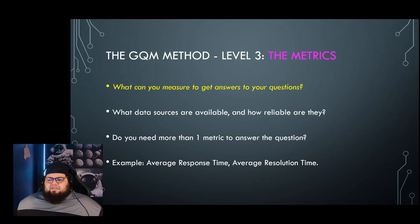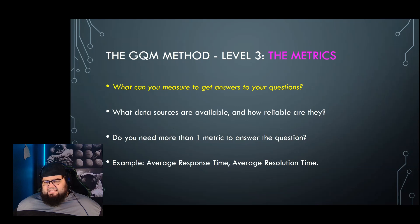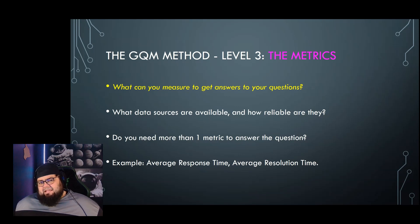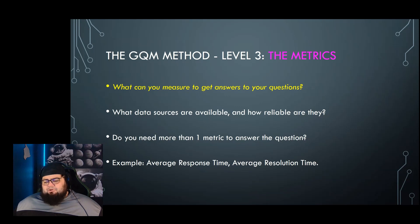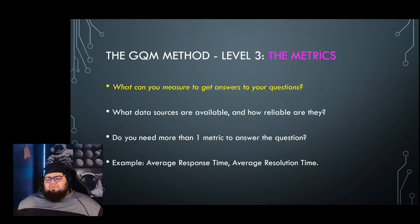And then ultimately you get to the metric. What can you measure specifically to answer your question and understand if you're on or off track to your goal? Good places to start: what data sources are available, how reliable are they, do you need more than one metric to get the answer — and often the answer to that is yes. In this case, what is our average response time? What is our average resolution time? How quickly are we resolving security problems or any problems on the network?